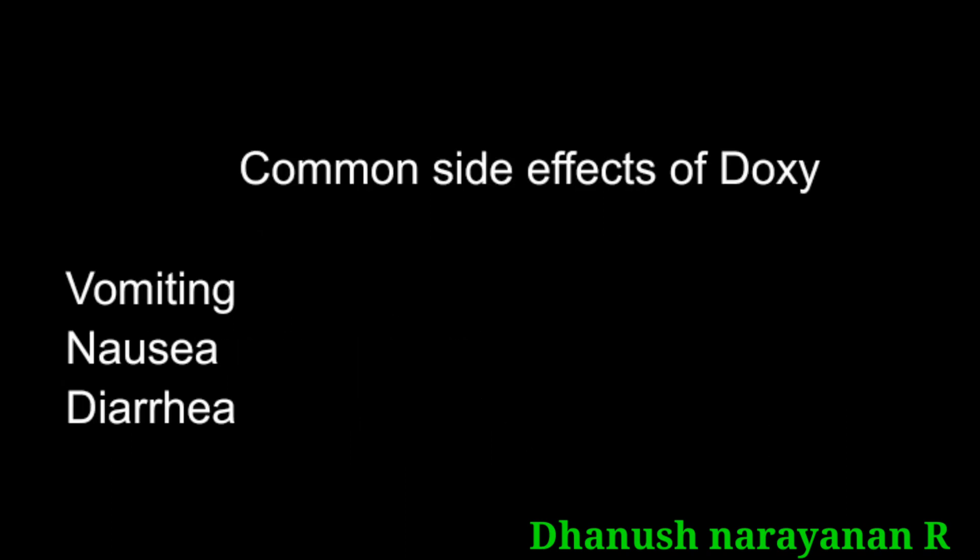Common side effects of doxycycline are vomiting, nausea, and diarrhea. While choosing a drug, we should know the side effects. In the allopathy system, maximum drugs have side effects, so we should check the side effects before we take the drug.